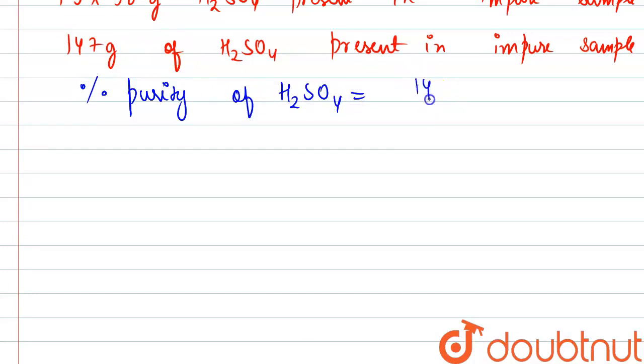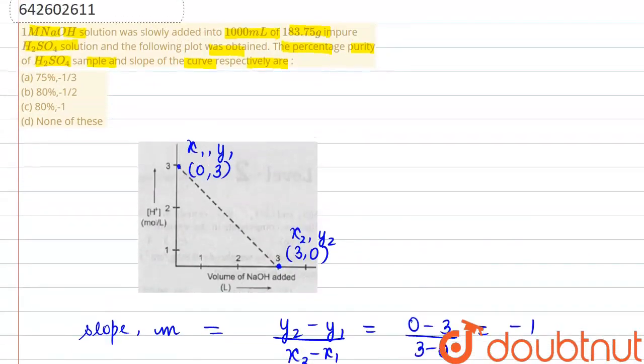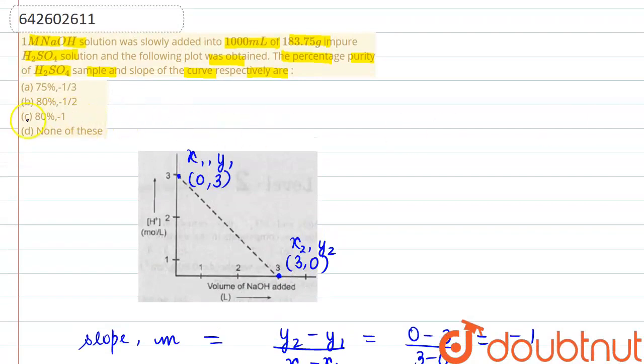Percentage purity of sulfuric acid: we will be taking 147 grams in the numerator, the amount of sulfuric acid which is present in the impure sample, divided by the amount given to us in the question, 183.75 gram, multiply by 100 for the percentage. From here we would be getting 80 percent.